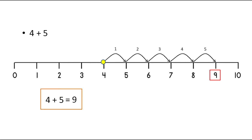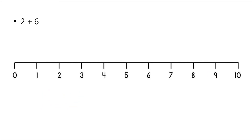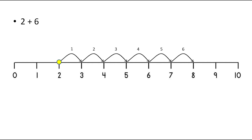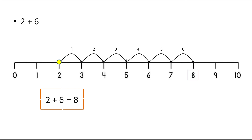Let's take the next one, that is 2 plus 6. As here the first number is 2, we have to point out on 2 and as we have to add 6 in 2, we have to move 6 steps towards right. Then we will reach on the number 8, therefore the answer of 2 plus 6 is 8.